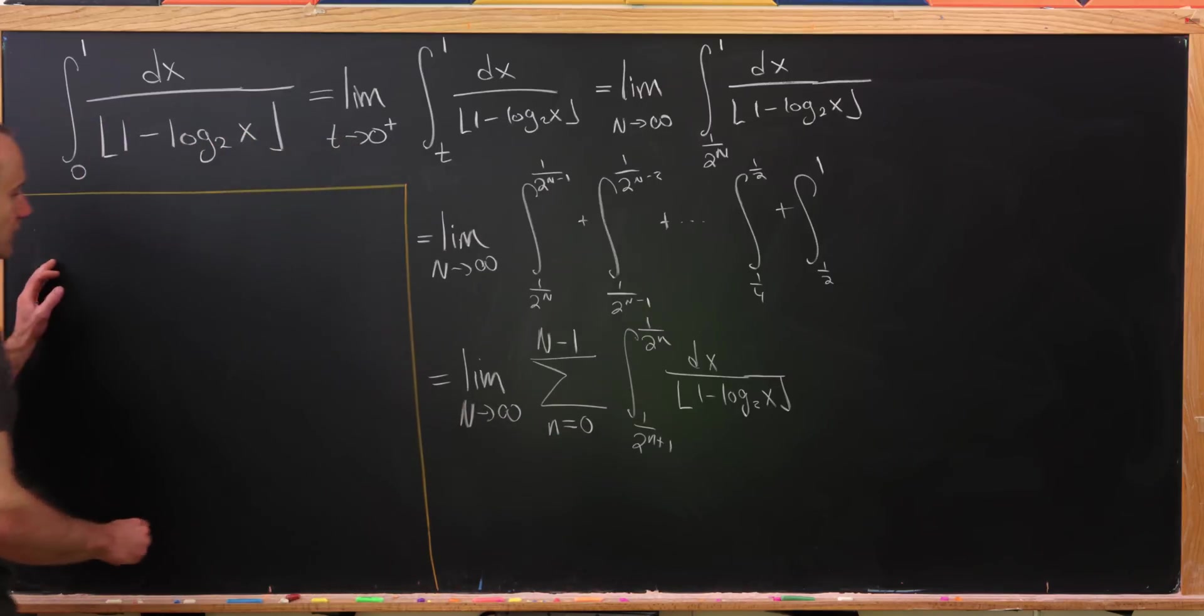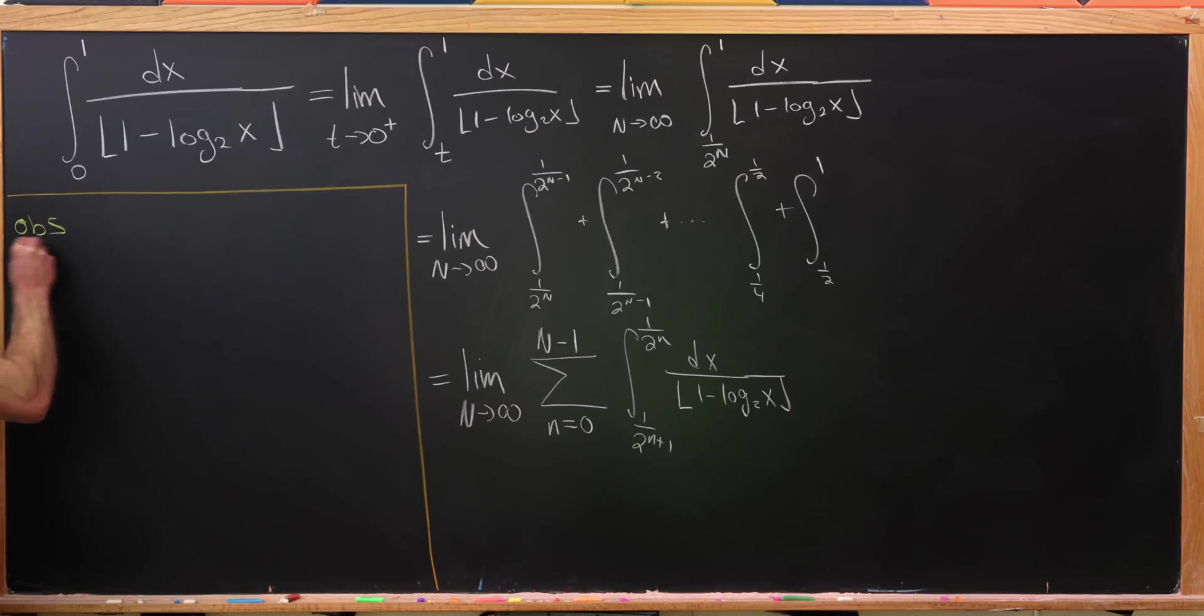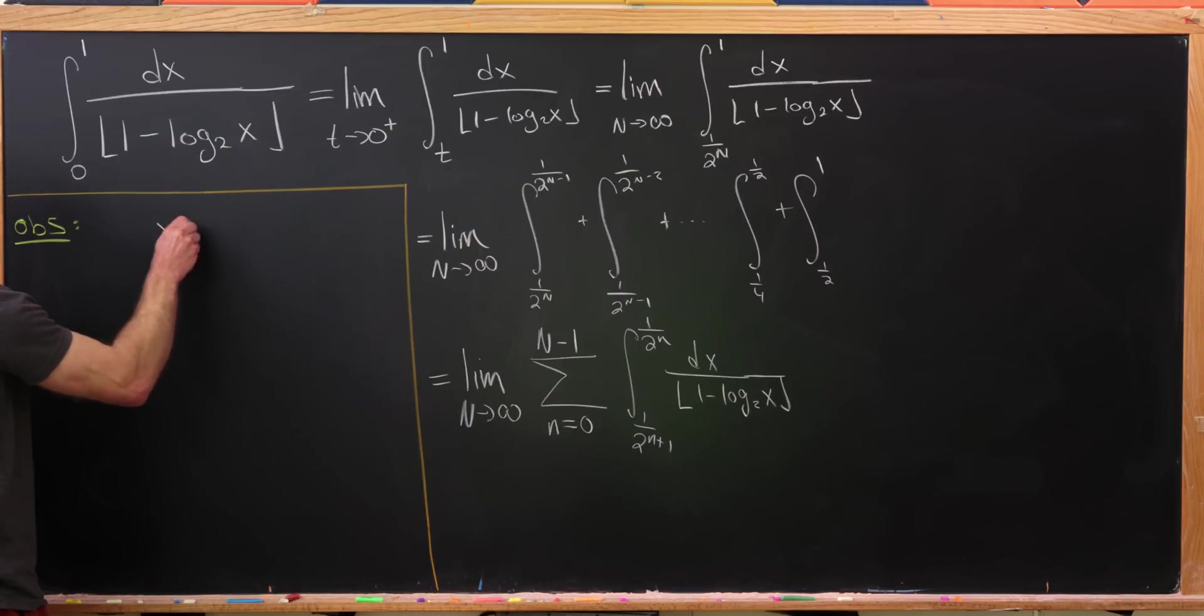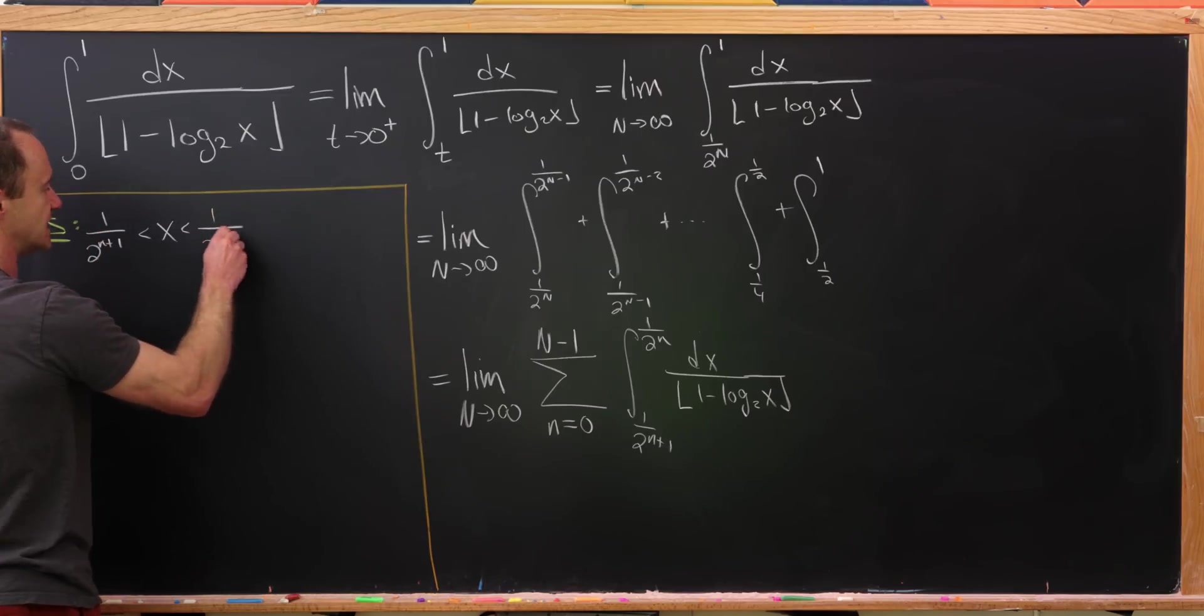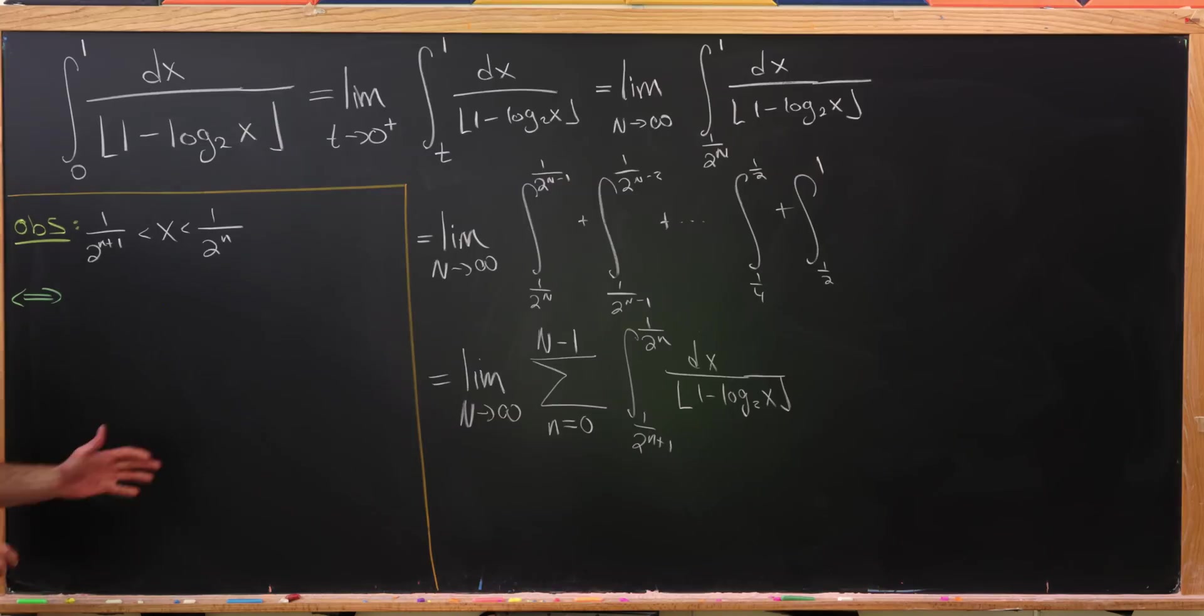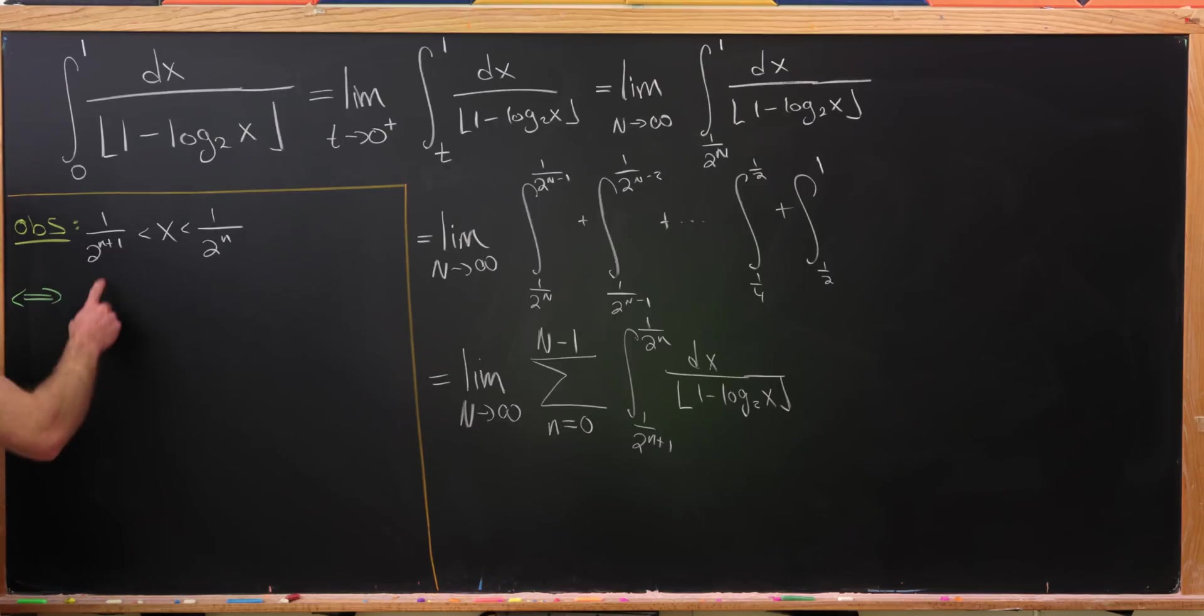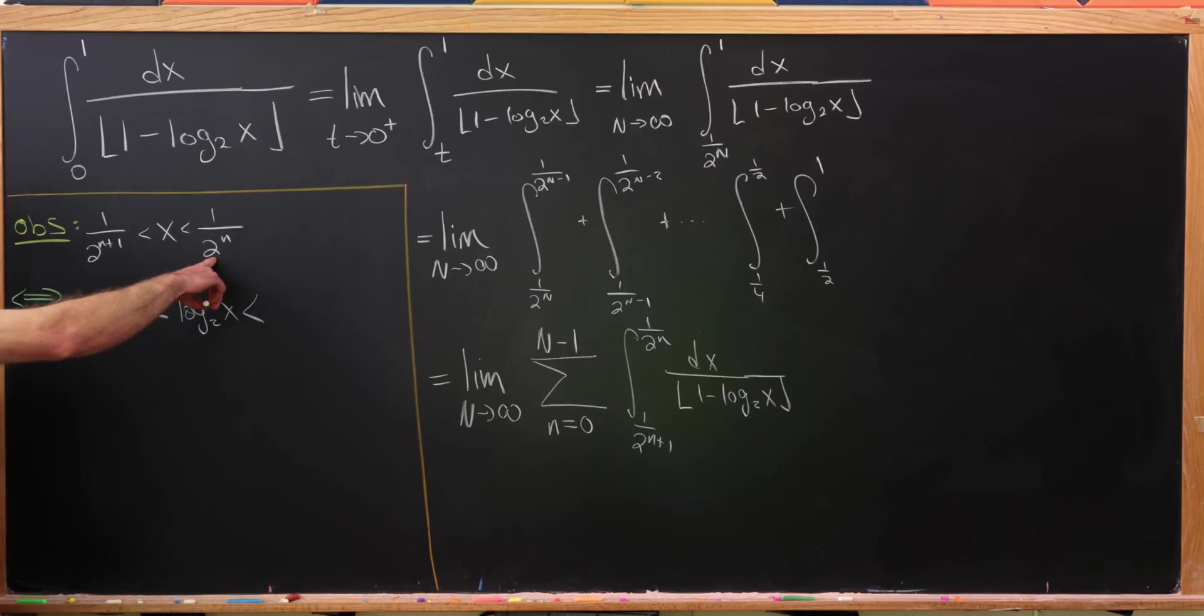And that's exactly what we'll do over here. So let's maybe put this as a little bit of an observation or a side calculation. So if we have x between 1 over 2 to the n plus 1 and 1 over 2 to the n, then that means that the log base 2 of x is between two things that are nice. Well, the log base 2 of x is an increasing function, so that means it will preserve our inequality.